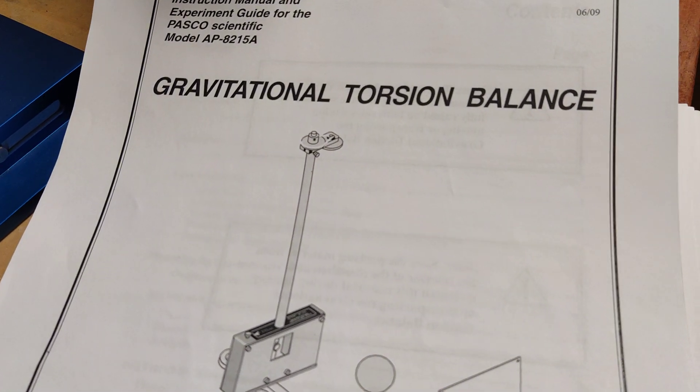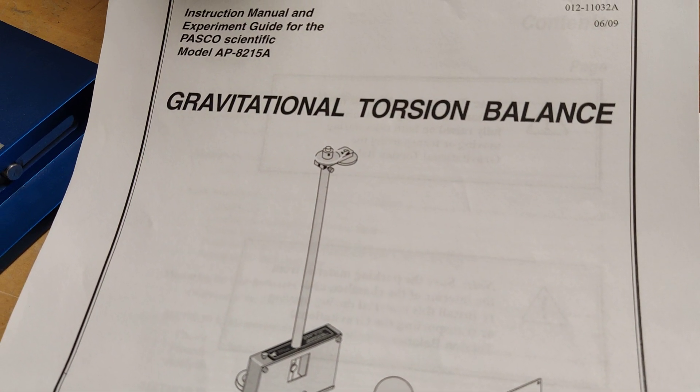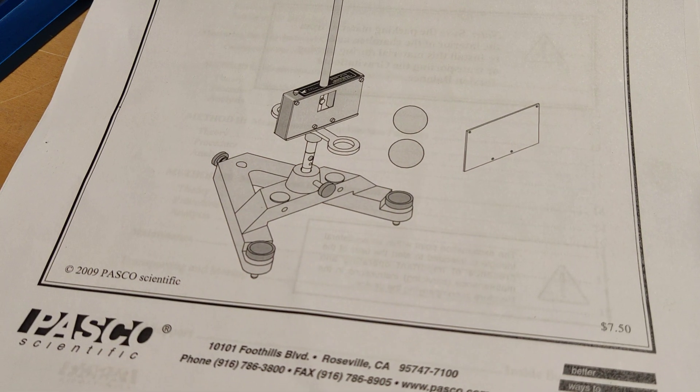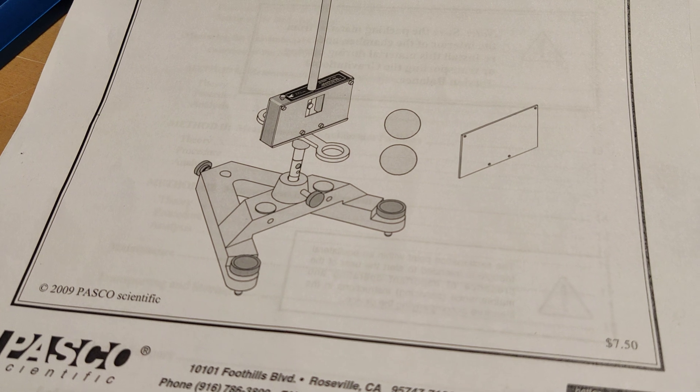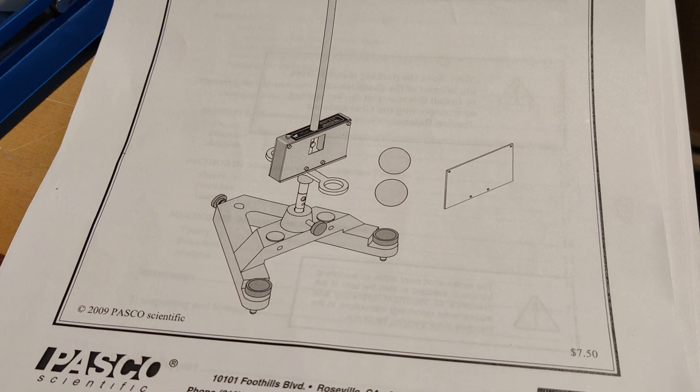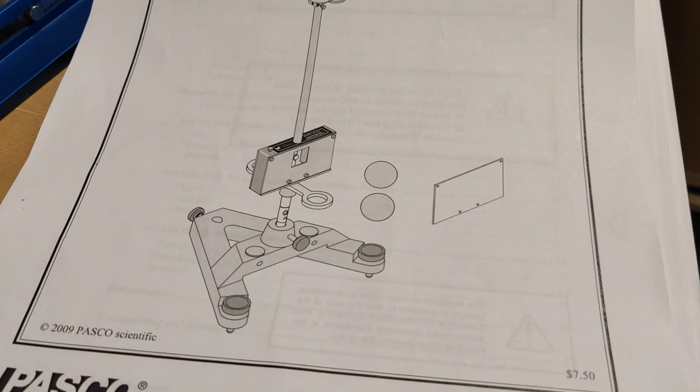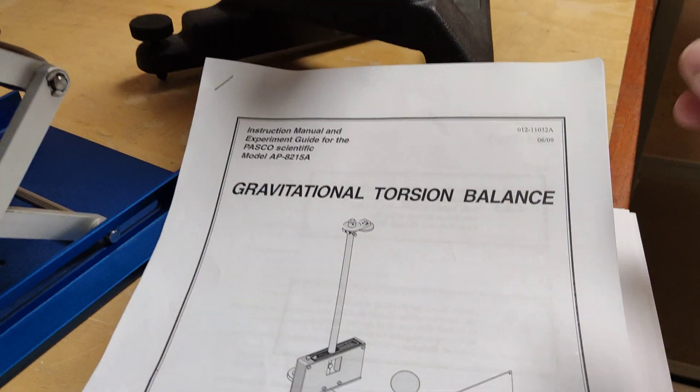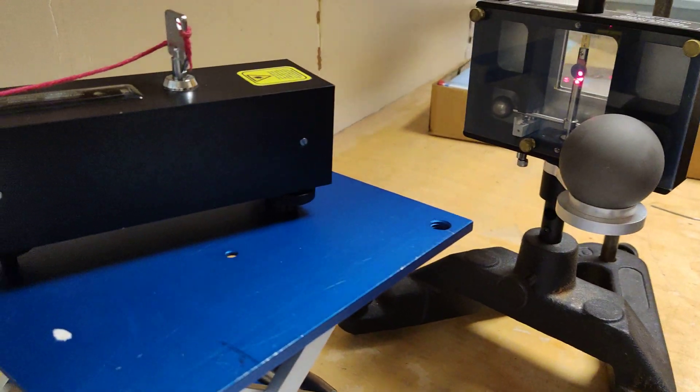Okay then physicists, I'm just going to show you very quickly how the gravitational torsion balance works from PASCO. This one's quite old actually, it's from 2009. It's quite an expensive bit of kit but it actually does work really quite well. You could find G to within 5% of its value.